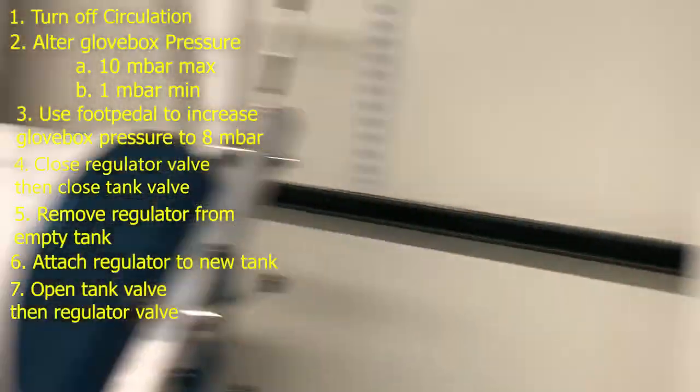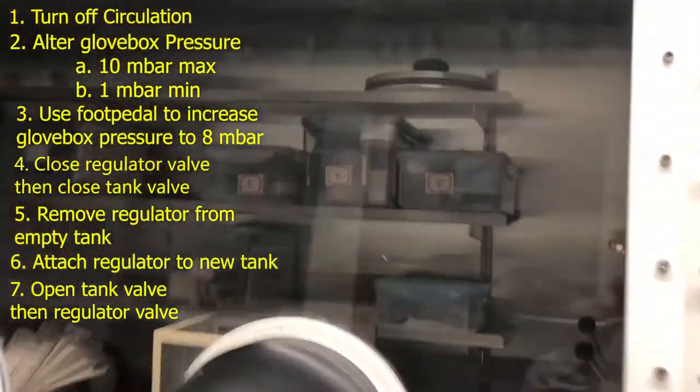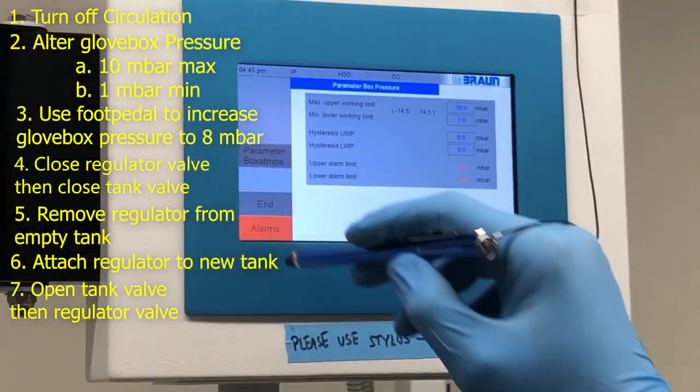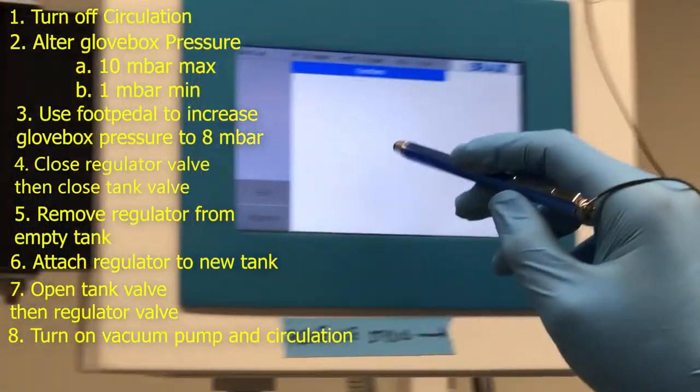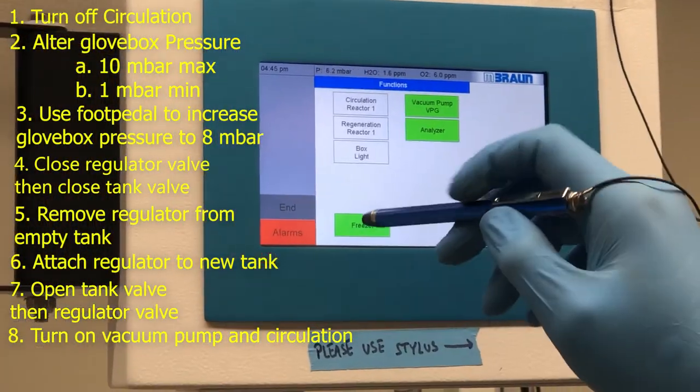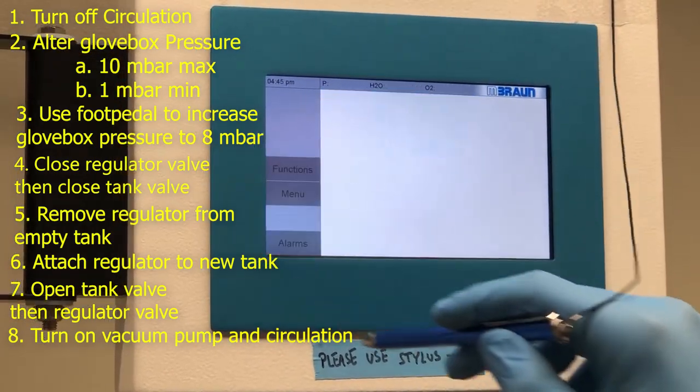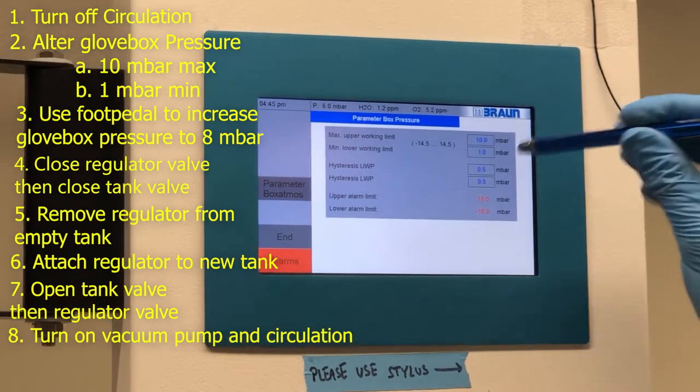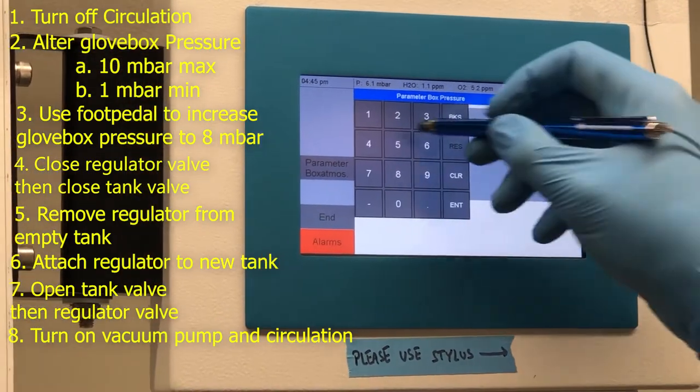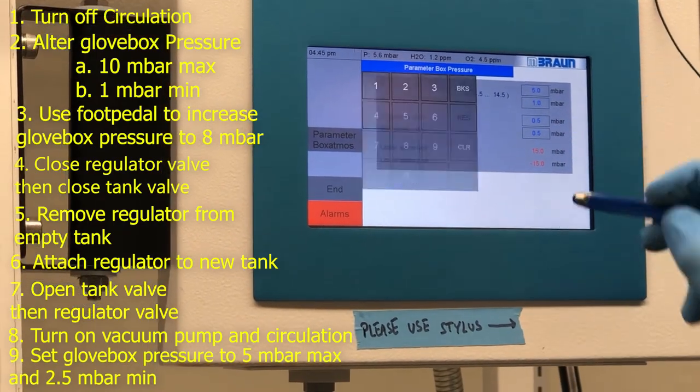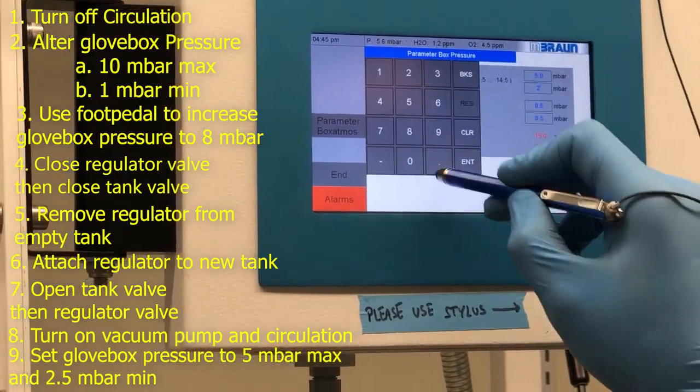Alright. Then we go back over here. And now we can, first I'm going to turn the vacuum pump on. In the functions menu. I'm going to turn circulation back on. And we're going to decrease this pressure back down to 5 and 2.5. 5 max. 2.5.